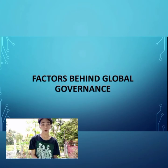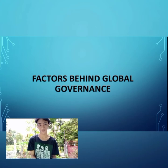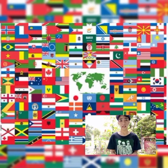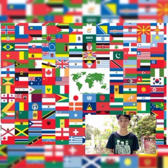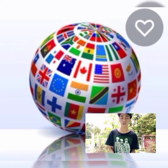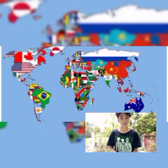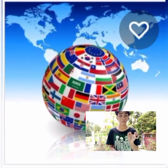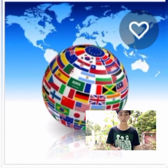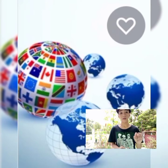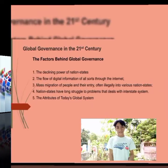Now let's move on to the factors behind global governance — the reasons for its establishment. First is the declining power of the nation-state. When we say nation-state, it is a political organization composed of homogenous people living in a sovereign state — people with a common history, origin, tradition, and language. In a single state, there would be various nations. Just like in the USA, there is a growing Filipino nation because there are many Filipinos living there.